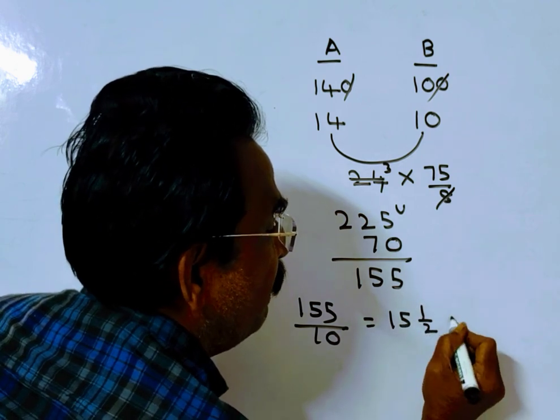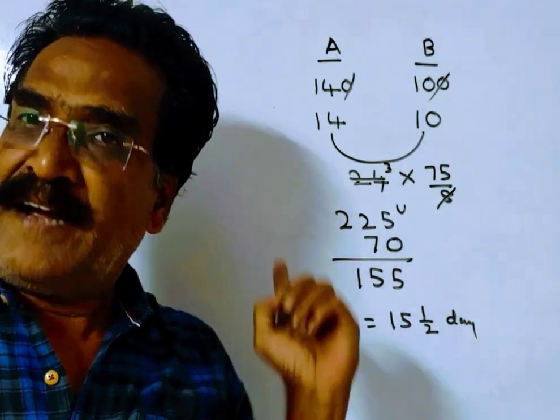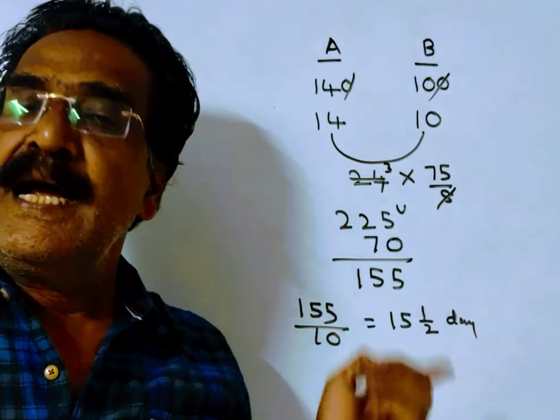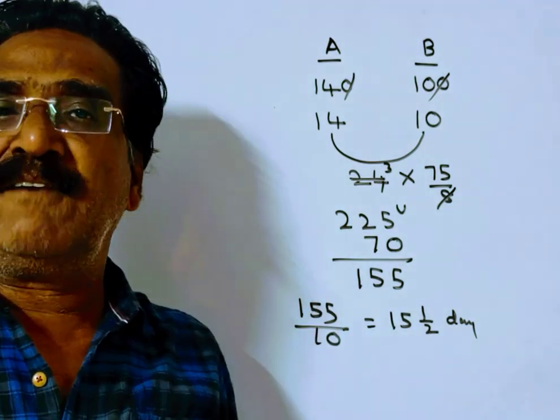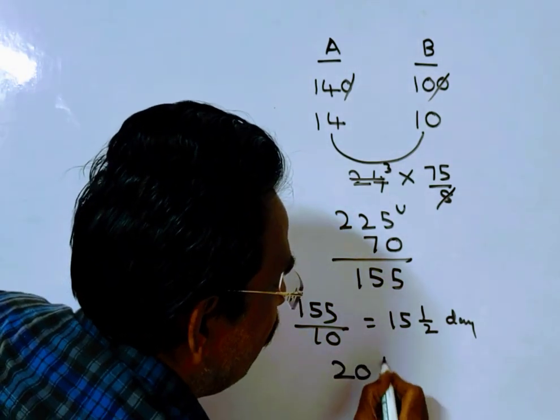That means 15 and a half days. So, now friends, the total work can be completed in—A worked for 5 days and B worked for 15 and a half days. So, total work will be completed in 20 and a half days.